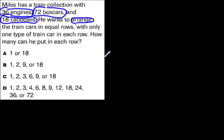He wants to arrange these cars in equal rows with only one type of train in each row. How many can he put in each row? That means he wants to put all of the engines in an array, all of the boxcars in an array by themselves, and all of the cabooses in an array. He's not combining all of these parts. No, he's putting an array, only one type, in each row.